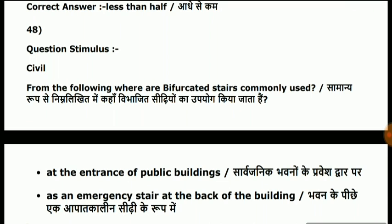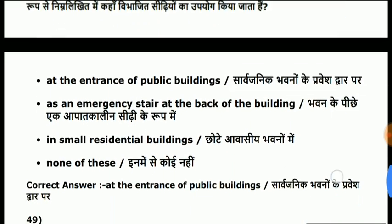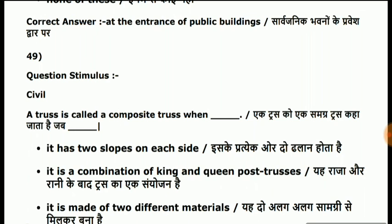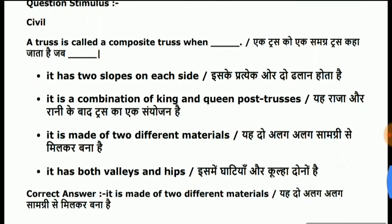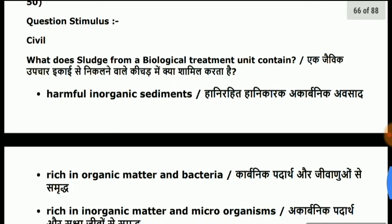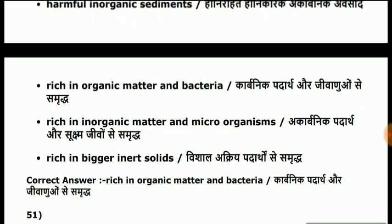Question 48: where are bifurcated stairs commonly used? Answer is at the entrance of public buildings. Question 49: the truss is called a composite truss when it is made of two different materials. Question 50: what does cells from a biological treatment unit contain? Answer is rich in organic matter and bacteria.